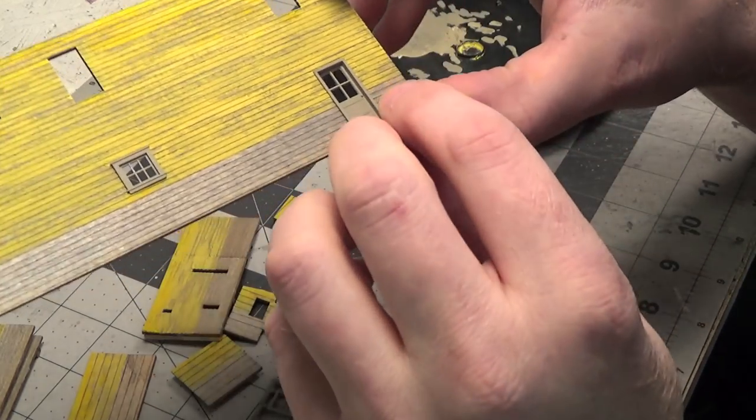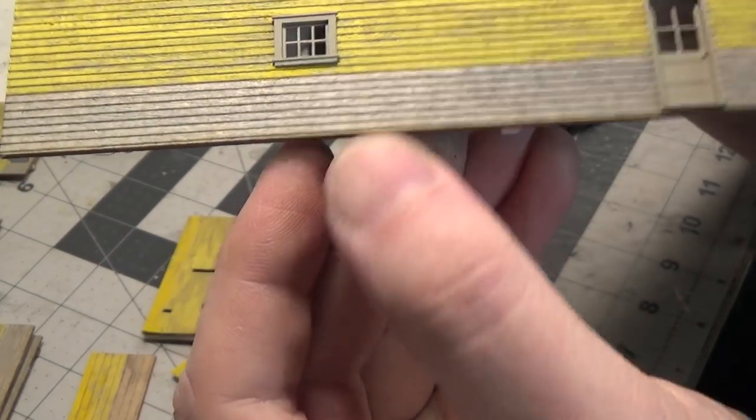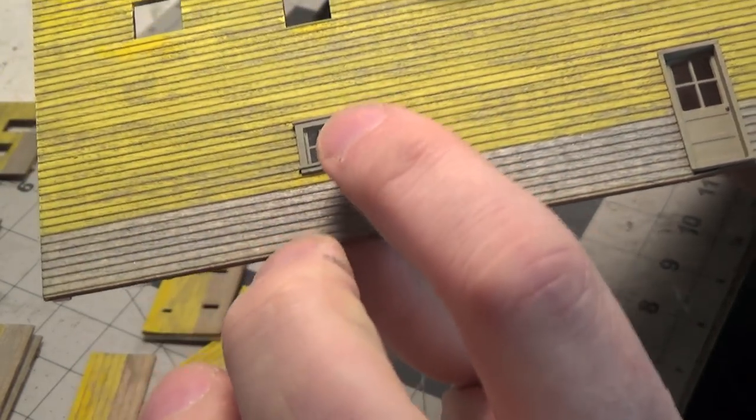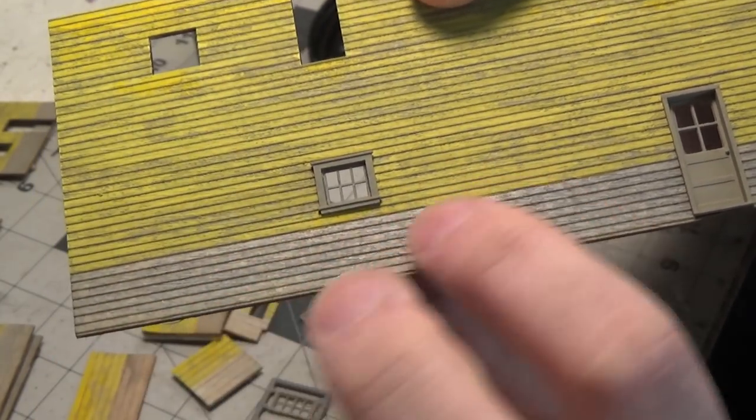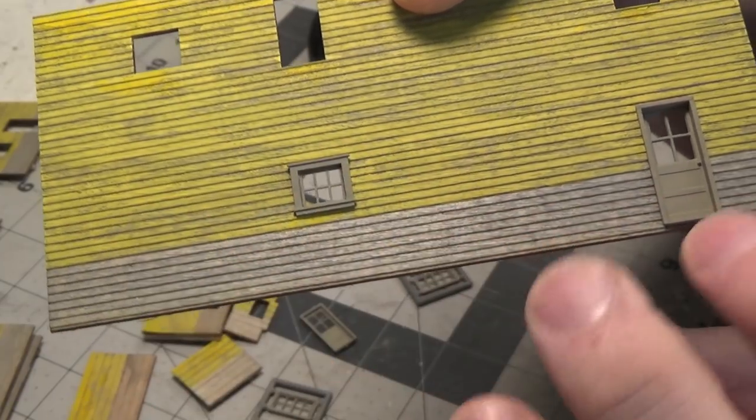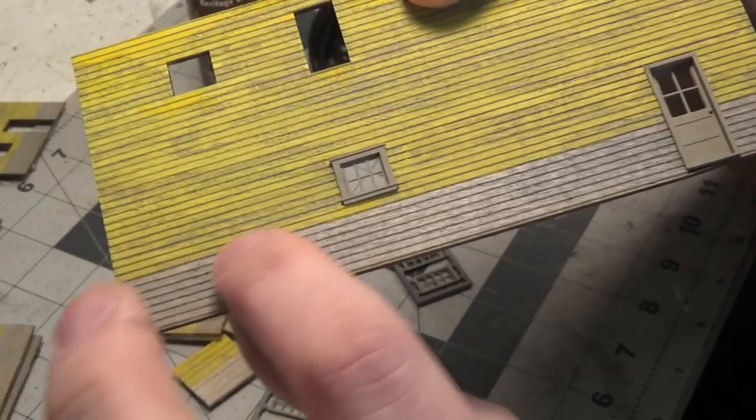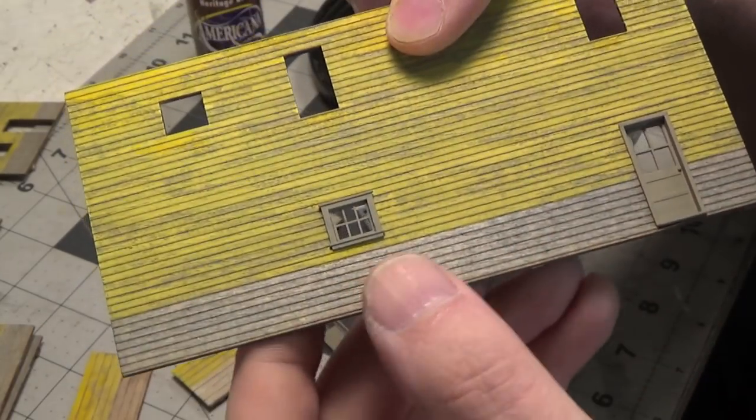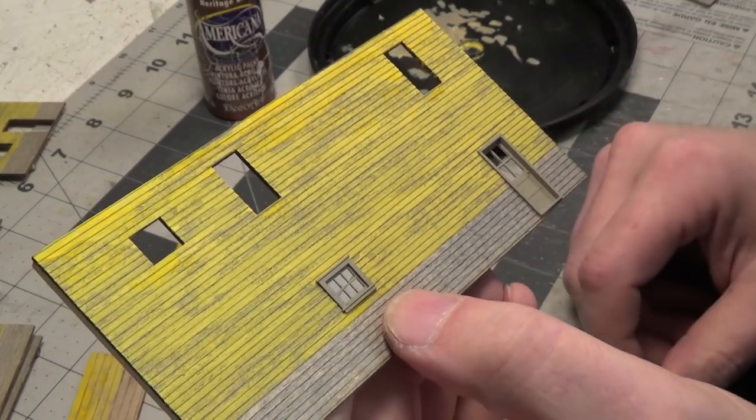So I placed a door and a window in the wall just to show you that we're just trying to match the bare wood color on the bottom part. Now we'll go over this with a red. And we'll go over all the doors, windows and trim with red. And we're using Heritage Brick by Americana.